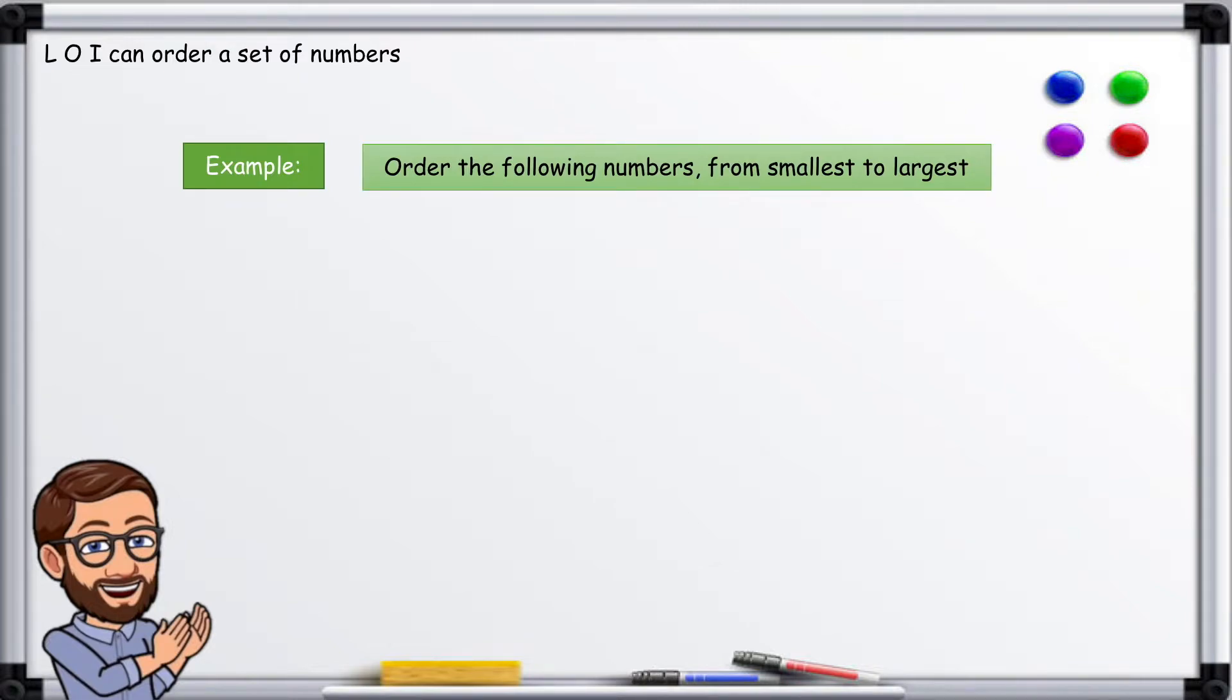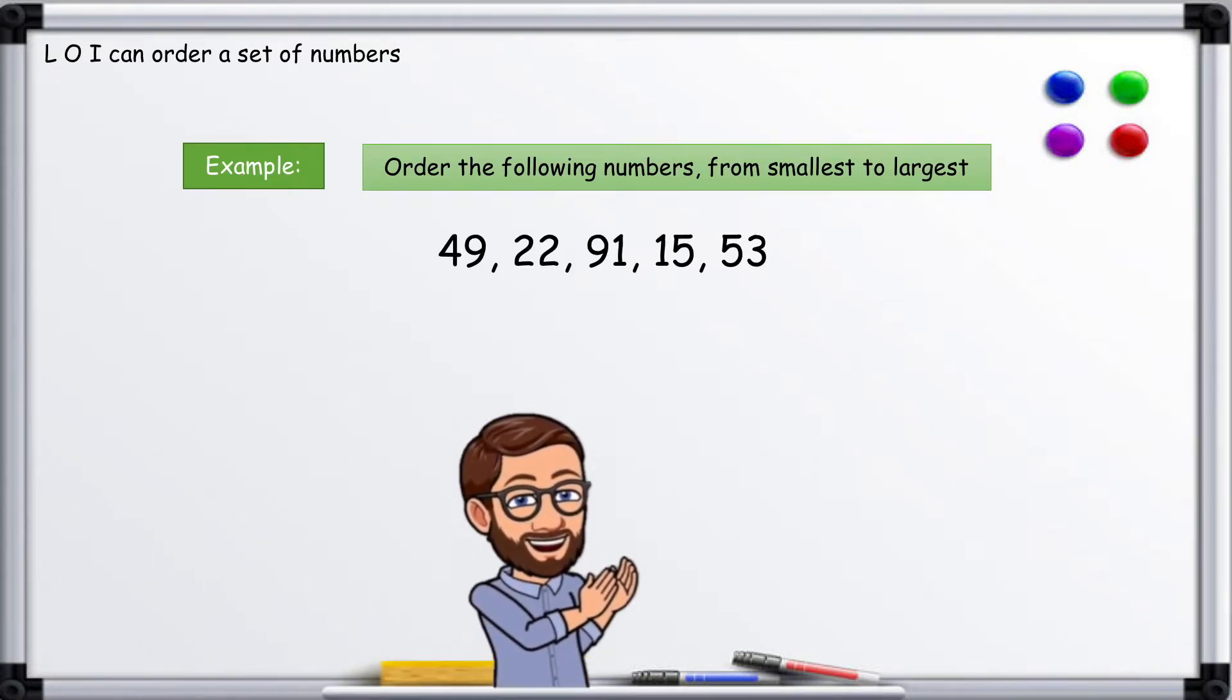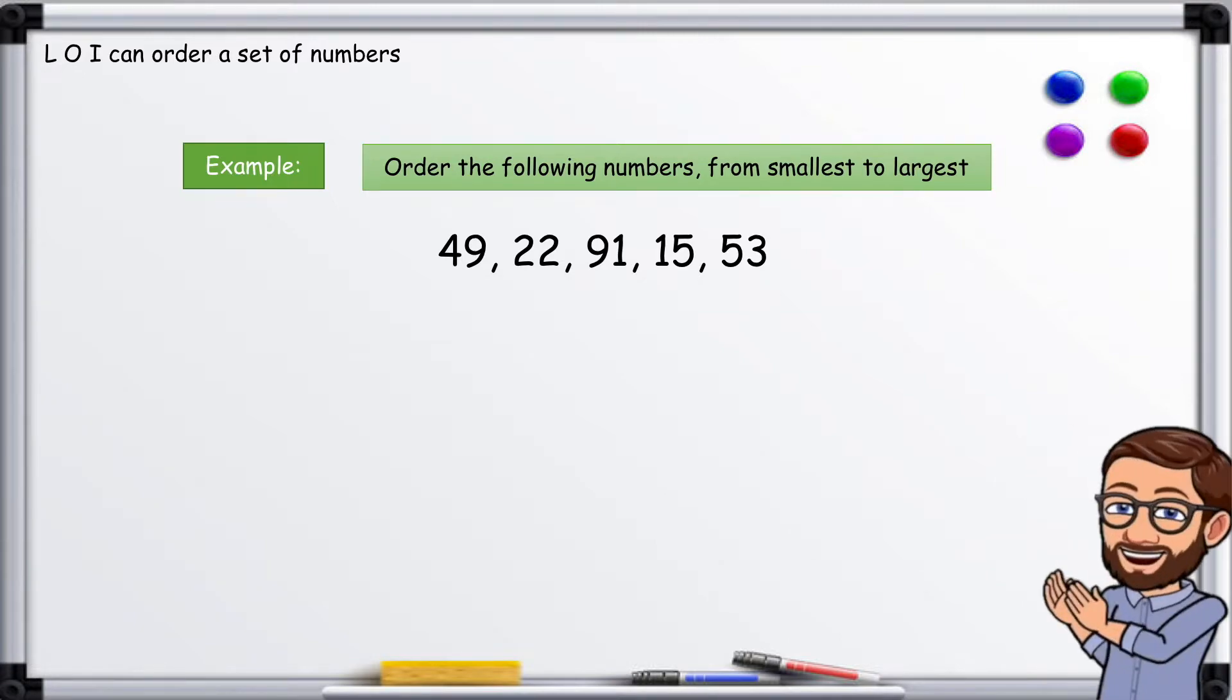Example. Order the following numbers from smallest to largest: 49, 22, 91, 15, 53. These are easy to put in order. Just use the first digit. Smallest to largest.